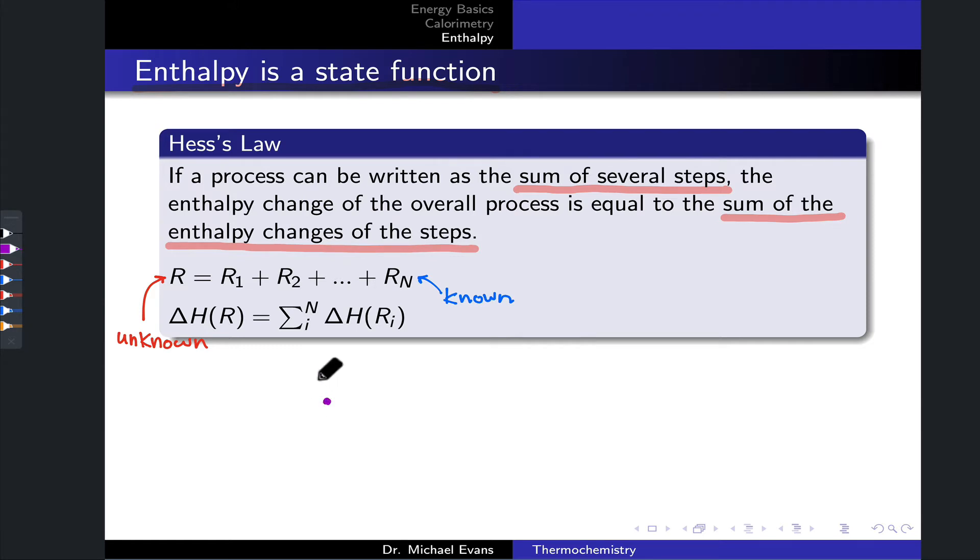We can diagram the situation in the following way. Say I start at a state S1, and I end at a state S2, and let's just say the enthalpy of S2 is higher than the enthalpy of S1. I can run this process by going directly from S1 to S2, and that's associated with some overall delta H, let's call it delta H of R value.